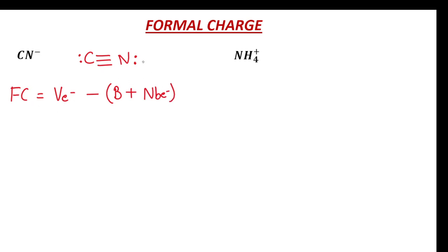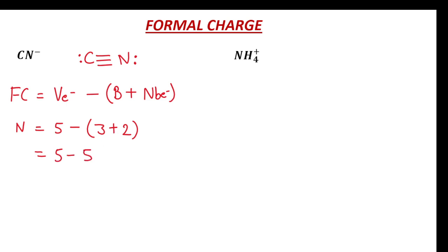Let's calculate formal charge for the nitrogen atom. For nitrogen, valence electrons equal 5, minus number of bonds which is 3, plus number of non-bonded electrons which is 2. So 5 minus (3 plus 2) equals 5 minus 5 equals 0. Formal charge for nitrogen atom is 0.